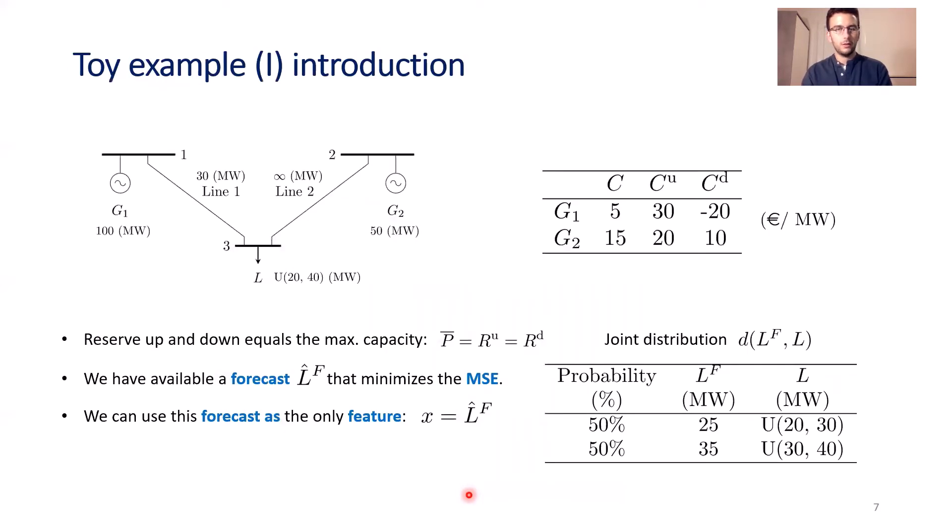We illustrate the performance of this model in a toy example. We have two generators and one aggregated net demand on this node. We also have a line with capacity constraint of 30 megawatts, and another line has infinite capacity. Generator one is cheaper than generator two but less flexible. Regulating with generator one is more expensive—the up-and-down costs are higher—so we will always use generator two when regulating. We have available a forecast that minimizes the mean square error, and we use this forecast as our only feature.